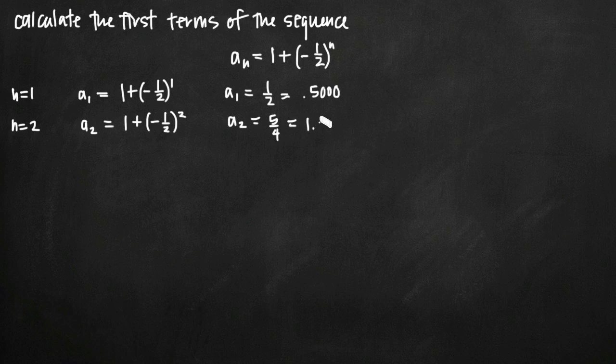We can continue on like this where we get n equals 3. That's the a_3 term. That's 1 plus the quantity (-1/2) to the third, which gives us a_3 equals 1 minus 1/8, or just 7/8, which is the same as 0.8750.